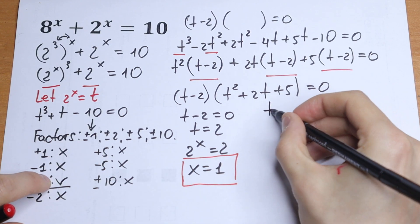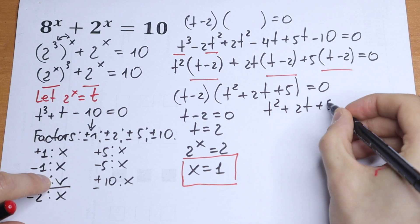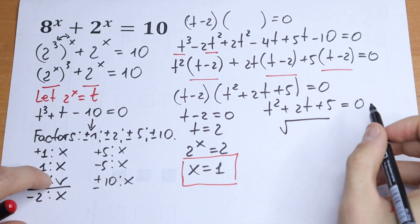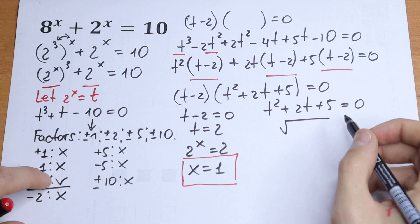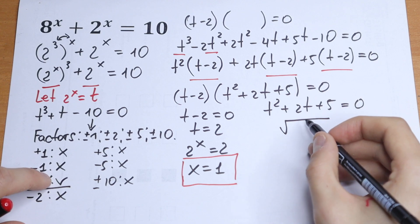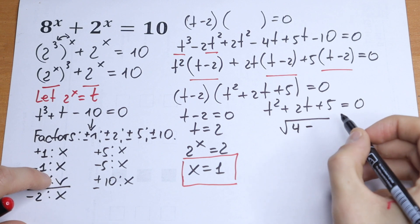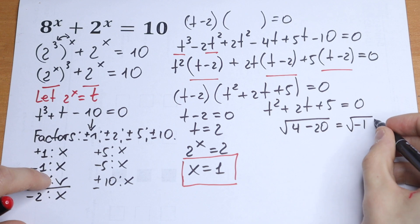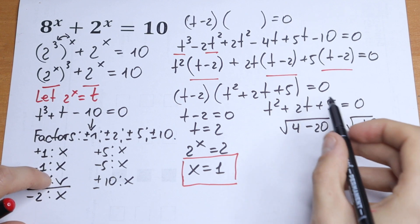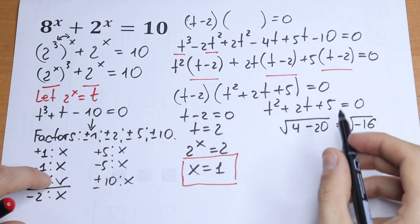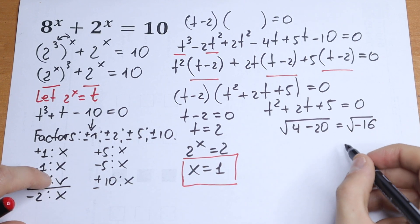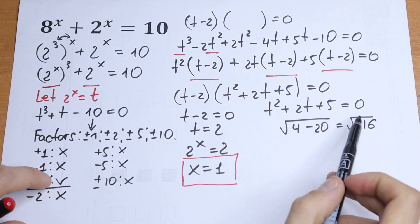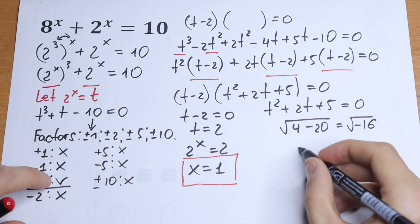Now for the second factor: t squared plus 2t plus 5 equal to 0. The discriminant is 4 minus 20, which is minus 16 — less than 0. So this quadratic has no real roots; the remaining solutions are complex. If you're interested, you can find t1, t2, t3 via substitution and you will get complex roots.